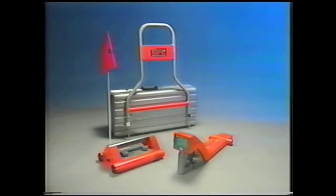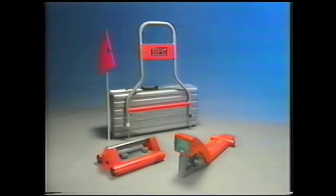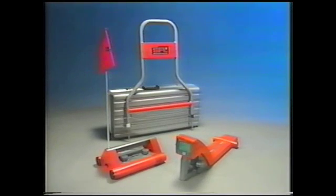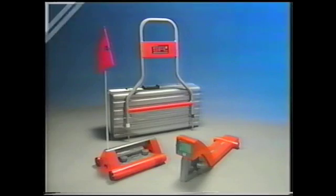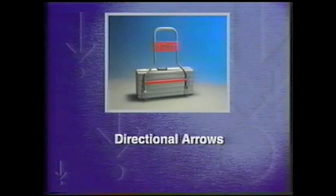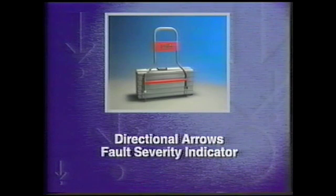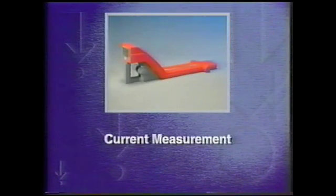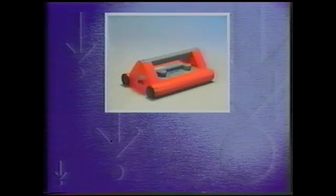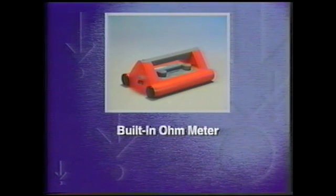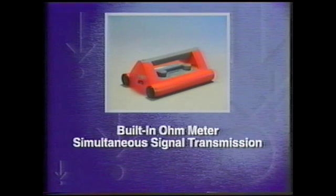The 9800 sheath fault locating system is a powerful, easy to use, highly accurate instrument with a full range of capabilities to meet the needs of the cable repair and maintenance industry. The lightweight A-frame with directional arrows and a fault severity indicator gives you pinpoint fault locating capability, and the receiver's current measurement feature aids in fault detection.